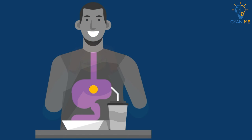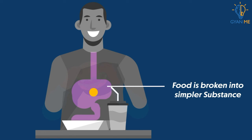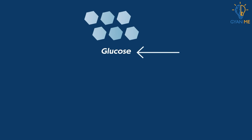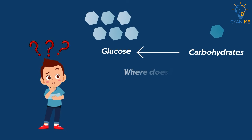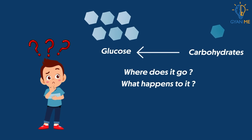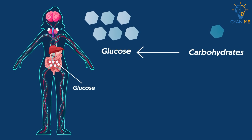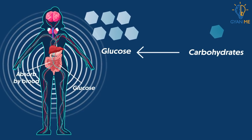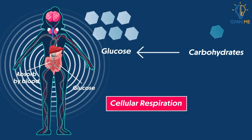Now students, we have seen how the food we eat is broken into simpler substances and then absorbed for use by our body. Glucose is produced at the end of carbohydrate digestion. It is absorbed by the blood, enters into cells of various tissues, and is utilized to generate energy — a process called cellular respiration. We will learn about cellular respiration in our next video.